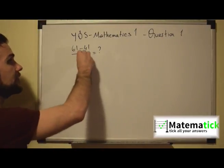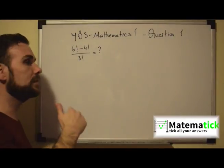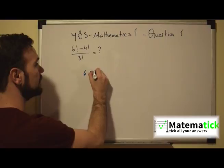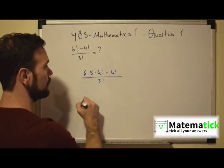Now we have to bring this fraction into the stage where we can get common factors so we will be able to simplify. How do we do that? We have 6 times 5 times 4 factorial minus 4 factorial over 3 factorial.